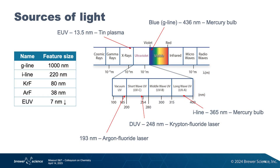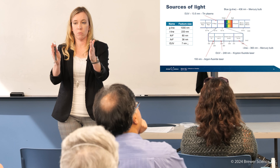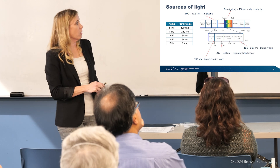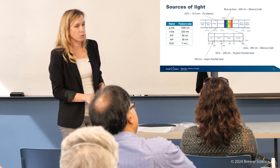We have a couple different sources of light. Many years ago we had something called G-line, which is still in the visible spectrum — the wavelength of light used was 436 nanometers, and it used the mercury bulb. And then sometime in the late 70s to early 80s, we also switched to I-line, which is 365 nanometers. So the wavelength of light has gotten a little shorter, which means we can get some features that are smaller. The feature size is the width that we use, and you could get around 220 nanometers with I-line — and we're still using a light bulb.